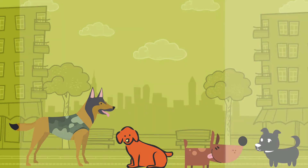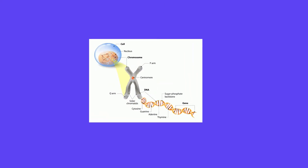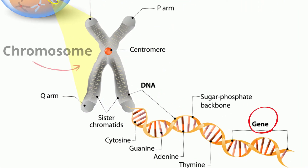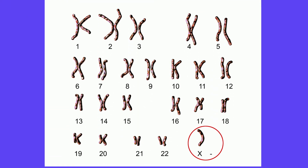In genetics, traits are determined by your genes, which are sections of DNA that carry the code for characteristics. Genes are located on chromosomes, which are structures in the nucleus of cells. Each cell in the body contains two copies of each chromosome, one inherited from each parent.